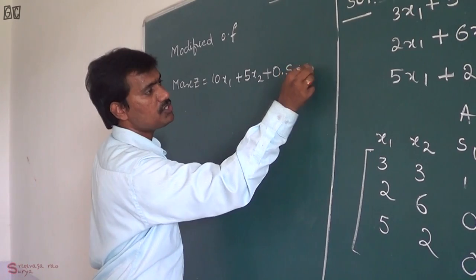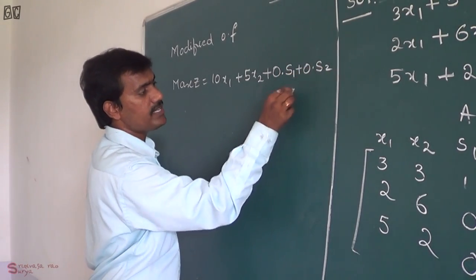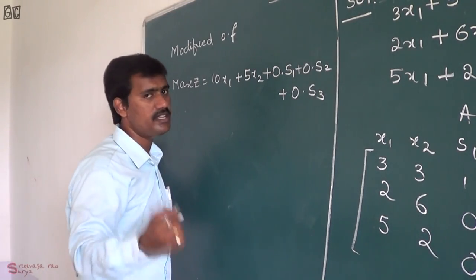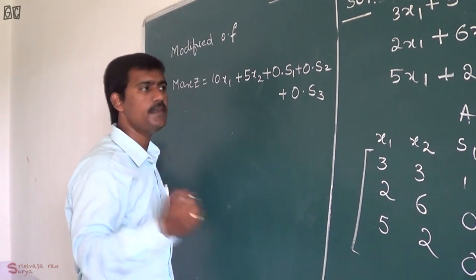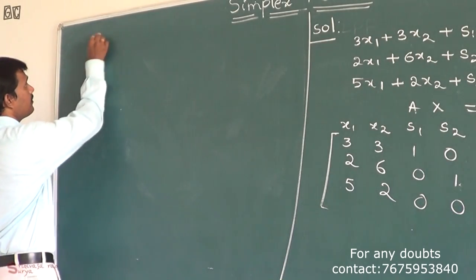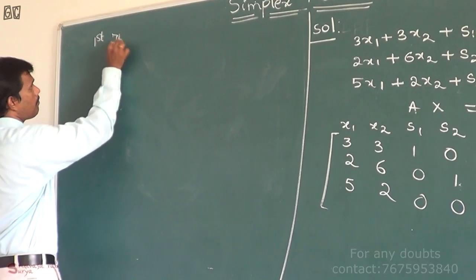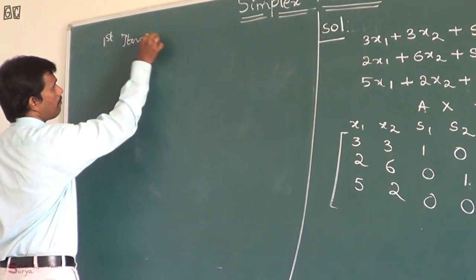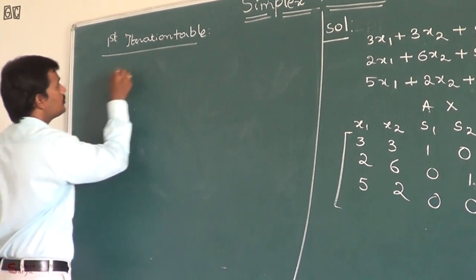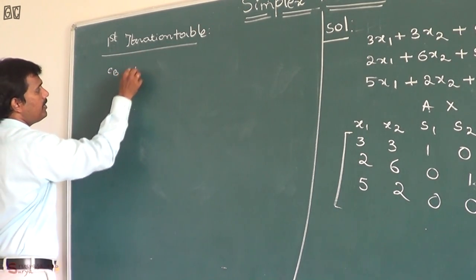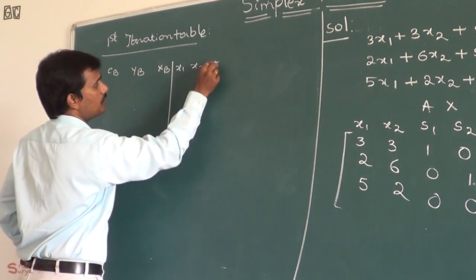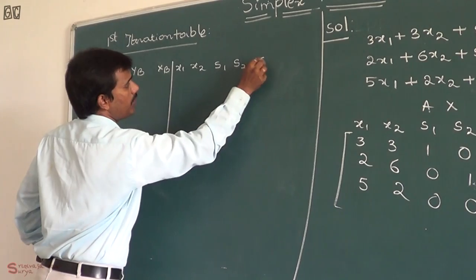For s1, s2, and s3, the cost will be 0 each, because we introduced three slack variables, so the cost of the introduced variables should be 0. Now we consider the first iteration table, with columns cb, yb, xb, and all the variables x1, x2, s1, s2, s3.